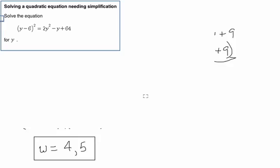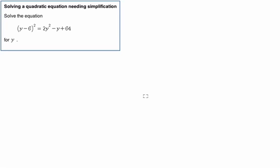There we go. How about one more? Just for extra practice. So here looks like kind of the same thing. So what if we've got this over on this side? We can still just switch them. And I'm going to say 2y squared minus y plus 64 minus the quantity y minus 6 squared equals 0.